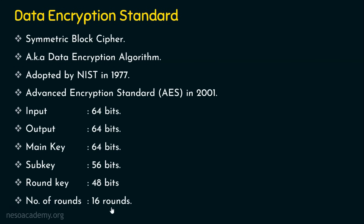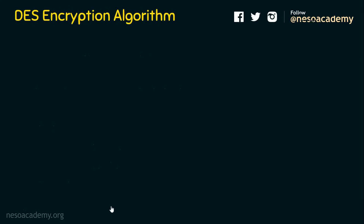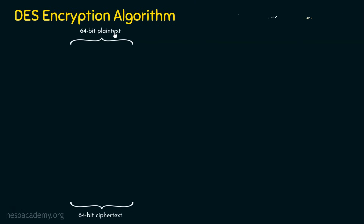This is the actual basics required for understanding DES. Let's dive into the encryption algorithm. DES is a block cipher — the plaintext and ciphertext are both 64 bits. DES takes a 64-bit plaintext and converts it into 64-bit ciphertext, and that is why it is called a block cipher, because it is taking a group of bits.